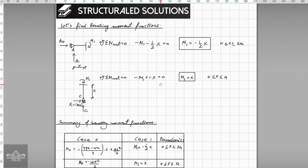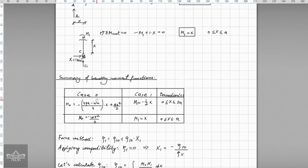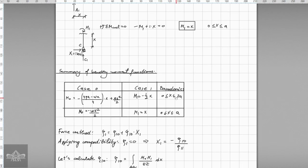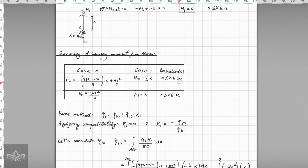As you can see, these are the bending moment functions. Now we can make a summary for each of these cases: we have case 0, we have case 1. And of course as a good rule of thumb is to add the boundaries so you can know which are the functions belonging to which boundaries so you won't make any mistakes when you do the integrals below.